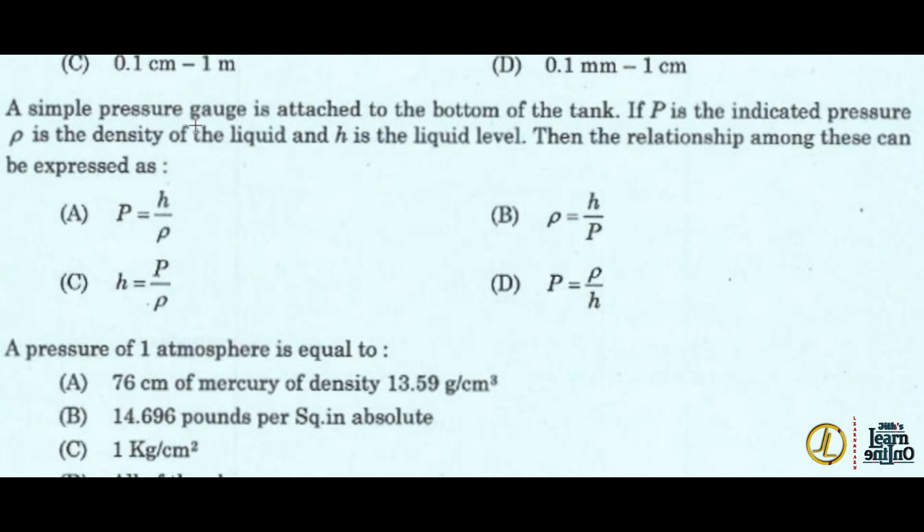A typical pressure gauge is attached to the bottom of a tank. If P is the indicator pressure, rho is the density of the liquid, and H is the liquid level, then the relationship among these three can be expressed as option A: H is equal to P divided by rho.